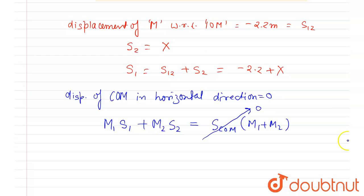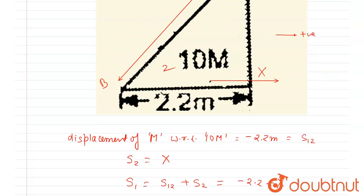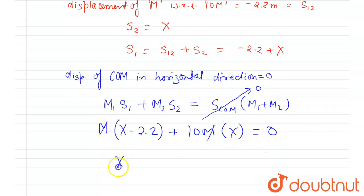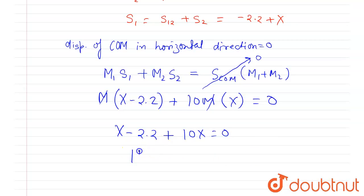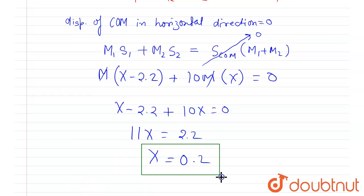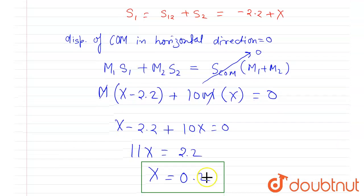So I write: m1·s1 + m2·s2 = 0. Substituting values: m1 is m and s1 is (x − 2.2), m2 is 10m and s2 is x. So m cancels out, giving x − 2.2 + 10x = 0, which gives 11x = 2.2, so x = 0.2 meters. The displacement of the wedge when the block reaches the bottom is 0.2 meters.